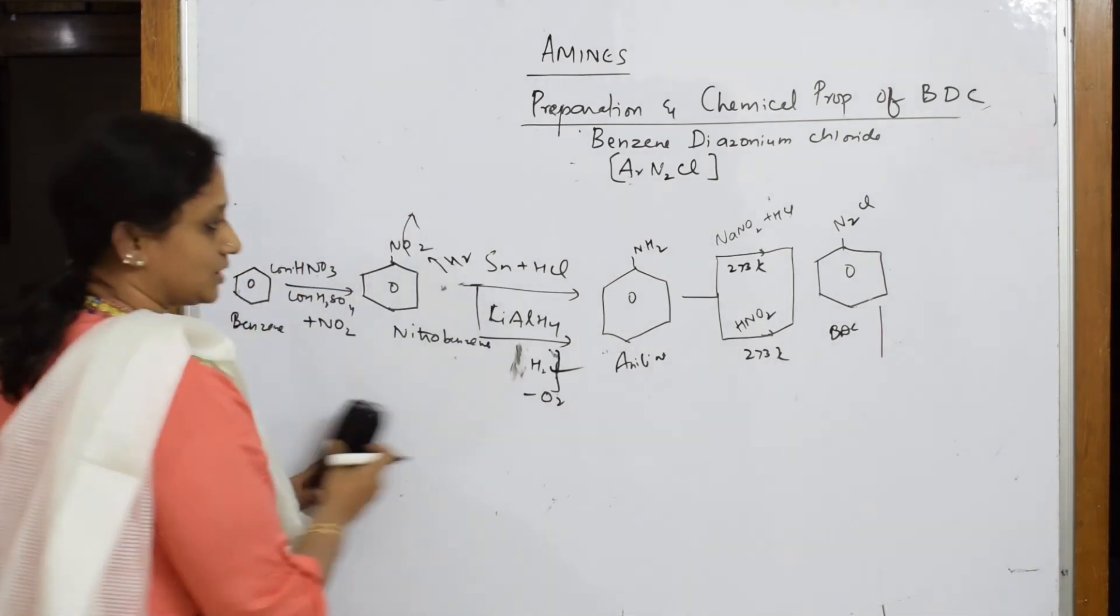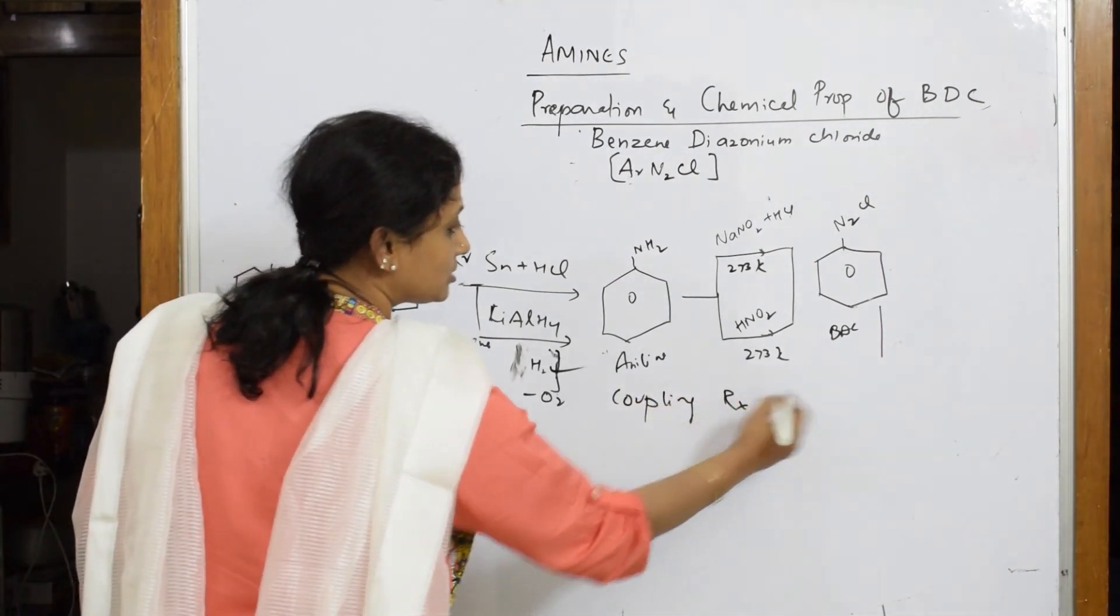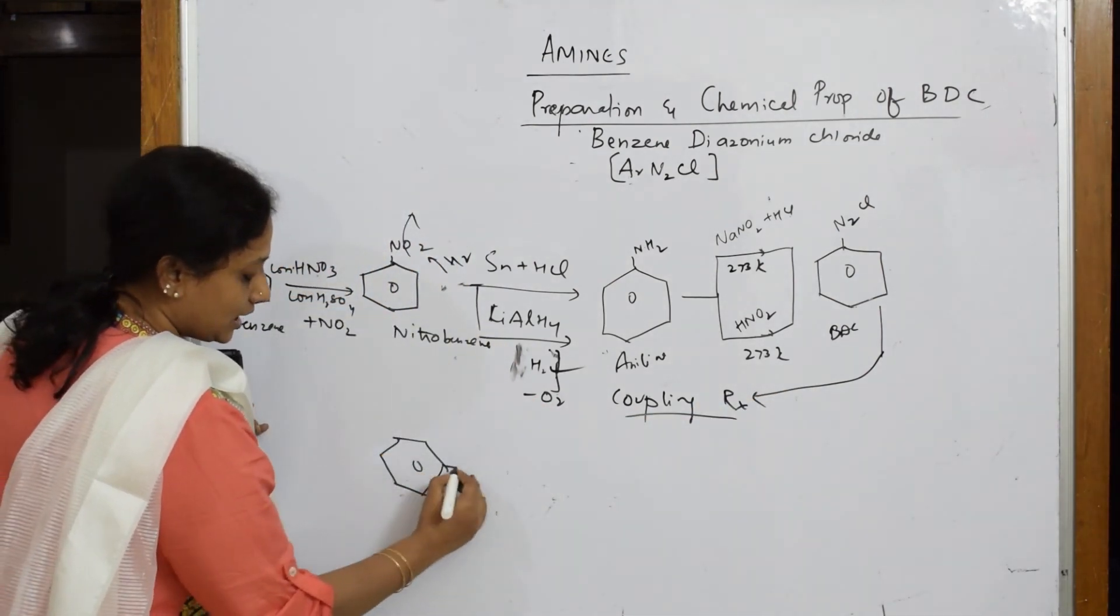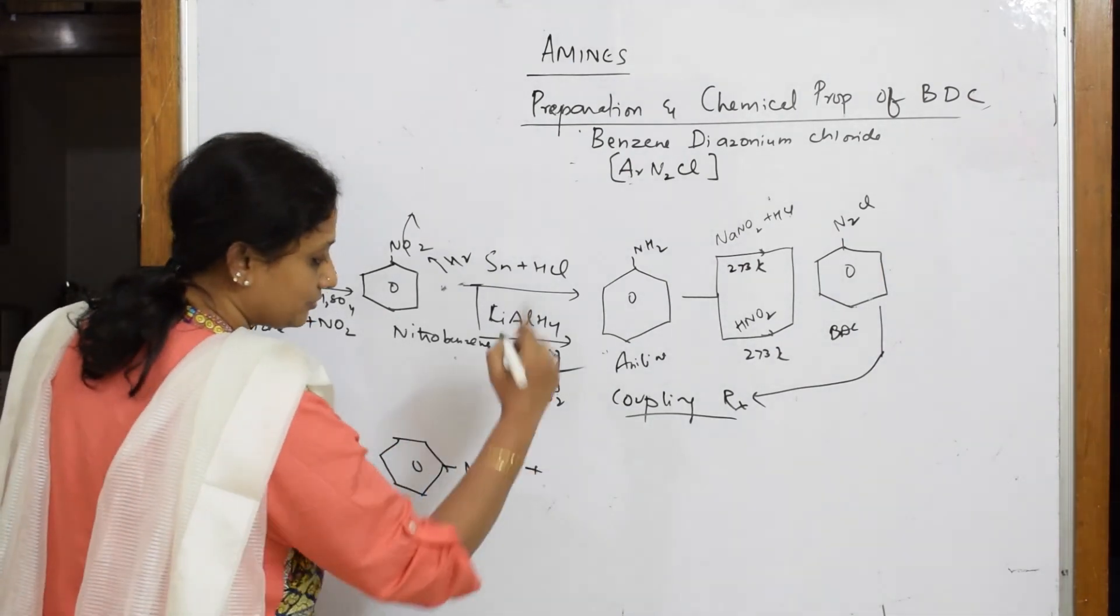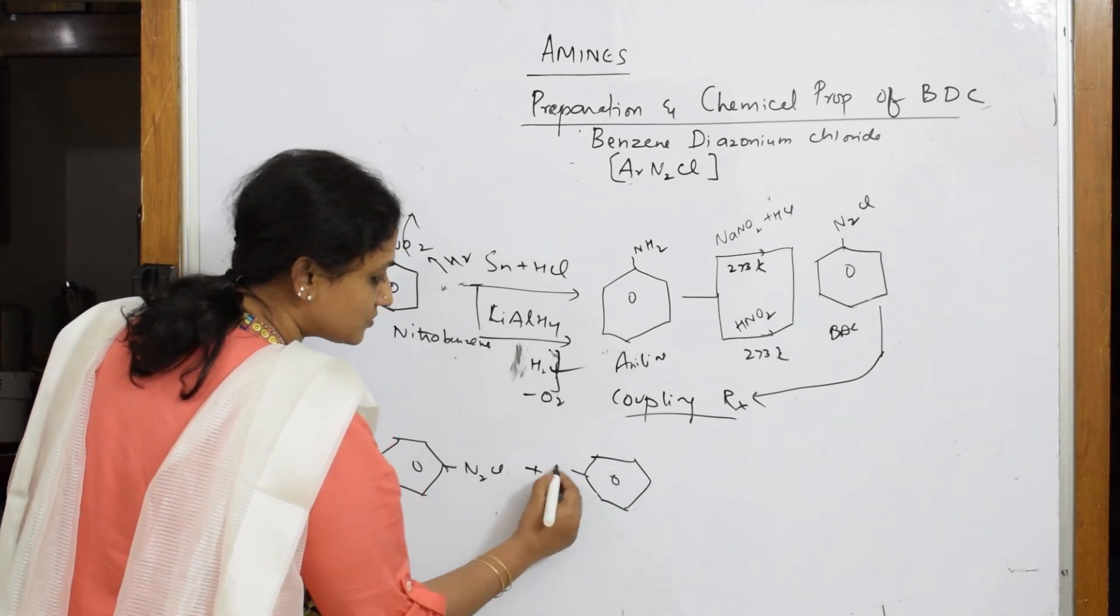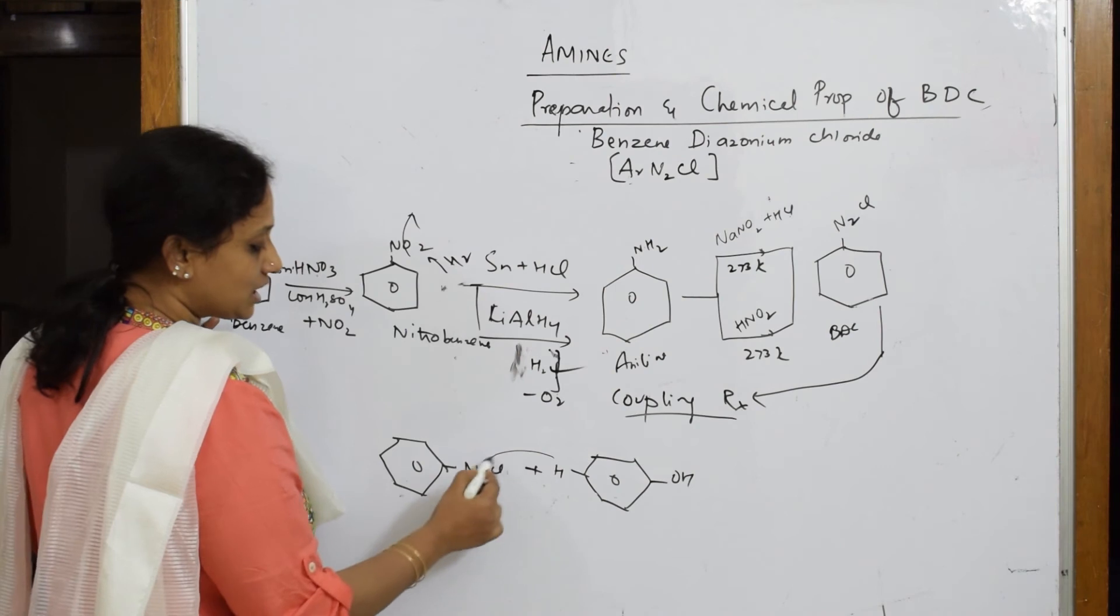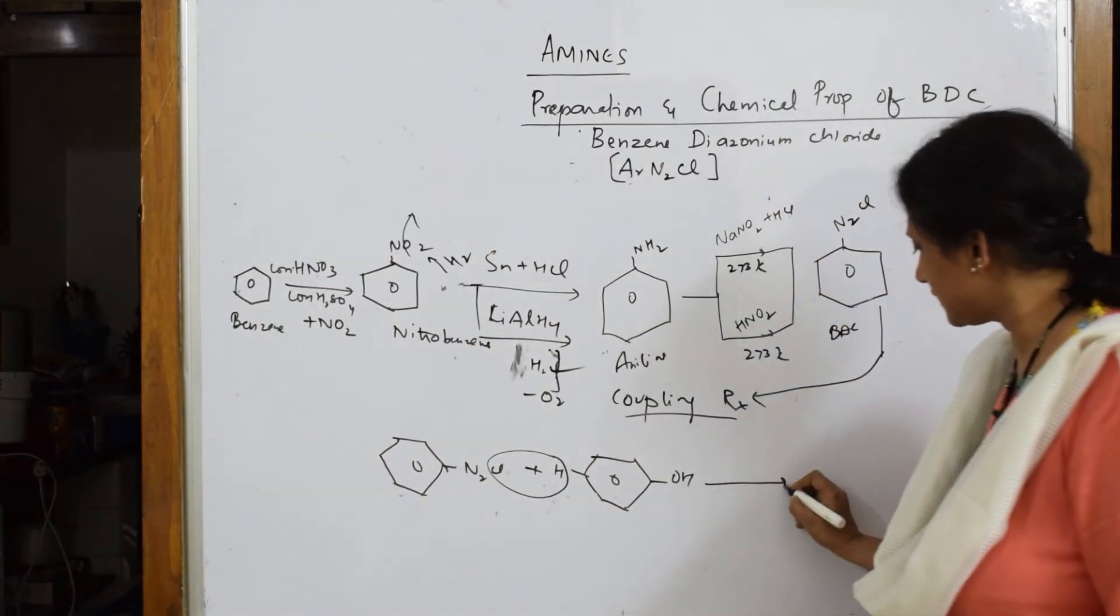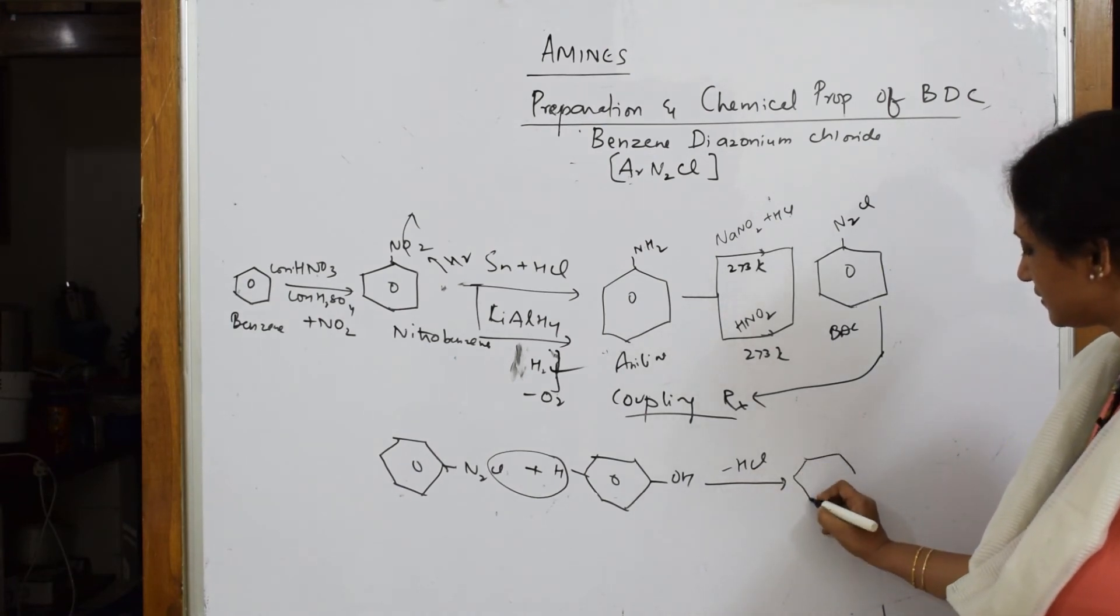Same story, again a coupling reaction. For coupling reaction, I am going to take BDC in such a way that your N2Cl is on your right hand side, and your phenol you are going to write in such a way that your hydrogen is facing the chlorine and OH. During coupling, HCl is lost.